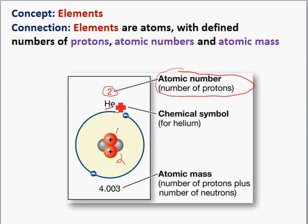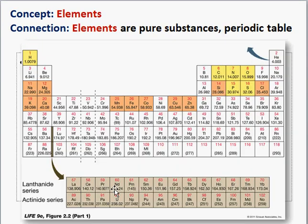And this corresponds to helium. Next, we have the atomic mass. The atomic mass is the total number of protons plus neutrons. So we have two protons, two neutrons, it gives us a mass of four. But remember, we have to sum all the isotopes that exist, so we don't get an exact value of four. Next, the concept of elements. The connection: elements are pure substances on the periodic table. So here's a periodic table.